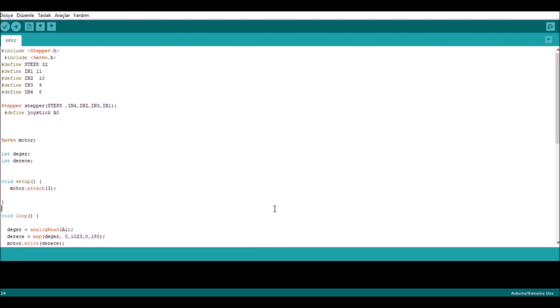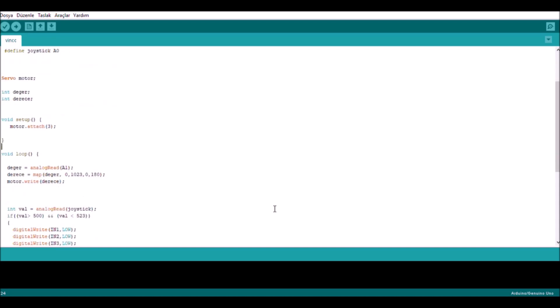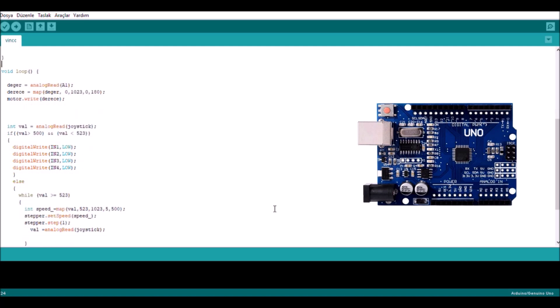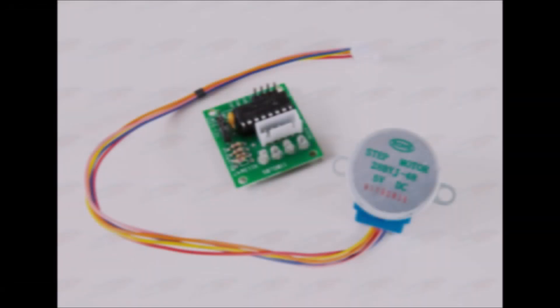Now I'm going to show you the codes that I have used. Thanks to these codes when the joystick is played it sends data to Arduino according to the direction and axis. Then Arduino makes the step motor or servo motor work according to these data.